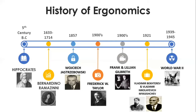World War II marked the development of new complex machines and weaponry, which made new demands on operators' cognition. It was no longer possible to adapt the principle of simply matching individuals to pre-existing jobs. The design of equipment had to take into account human limitations and take advantage of human capabilities. This is just a brief history of ergonomics — how it started and who the proponents are.